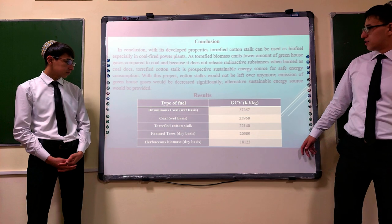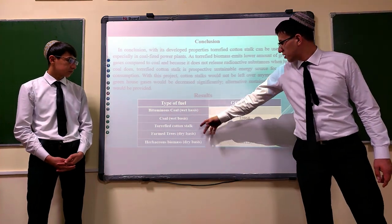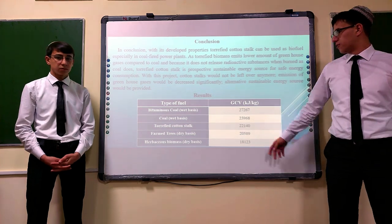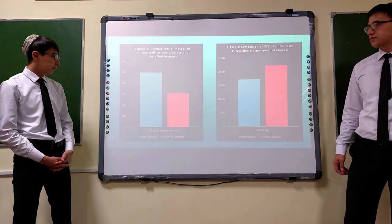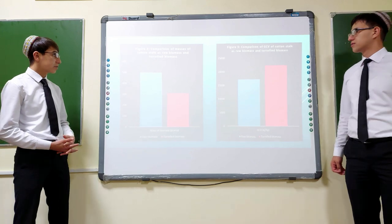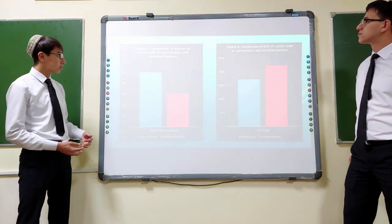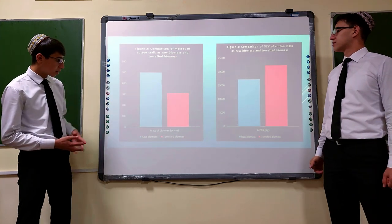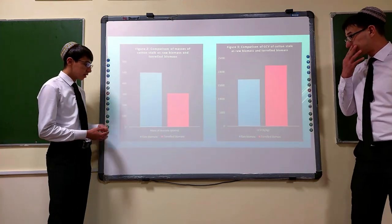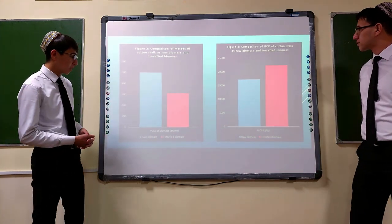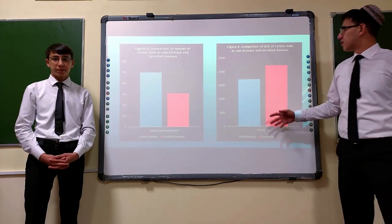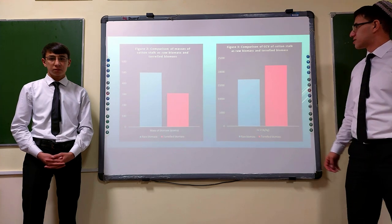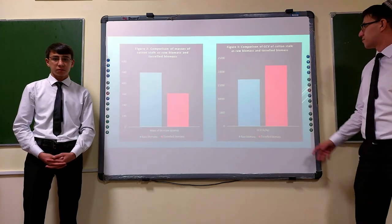In this result, this is type of fuel and gross caloric value of fuels. In this diagram, comparison of mass of cotton stock as raw biomass and torrefied biomass. In this diagram, this is comparison of GCV of cotton stock as raw biomass and torrefied biomass.